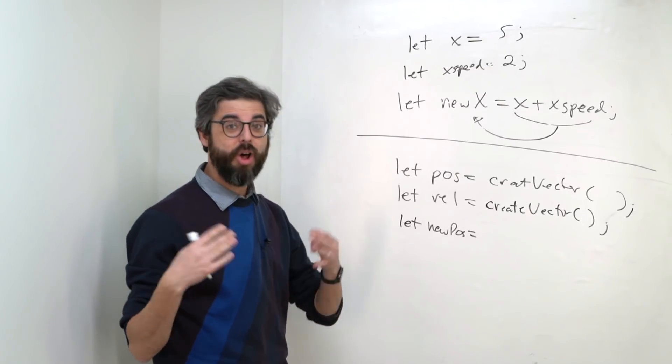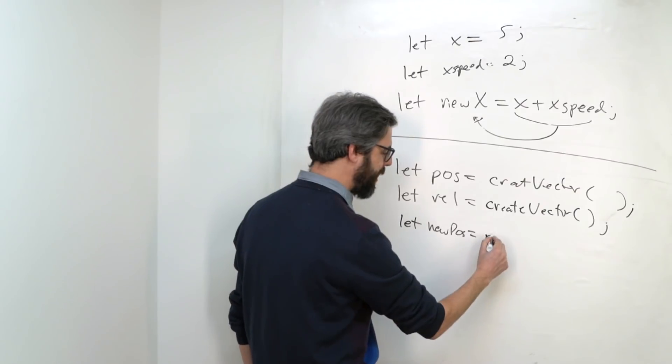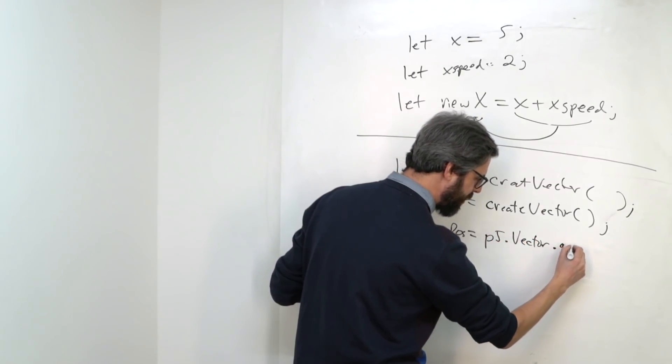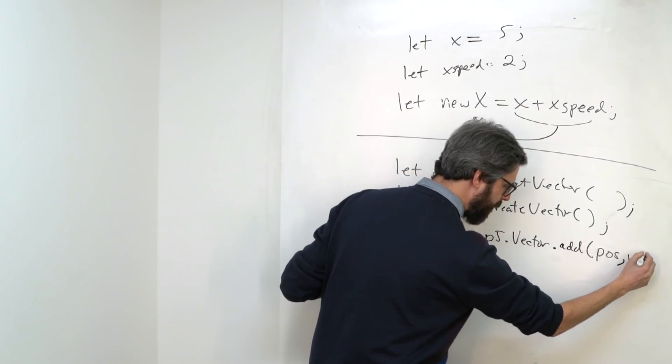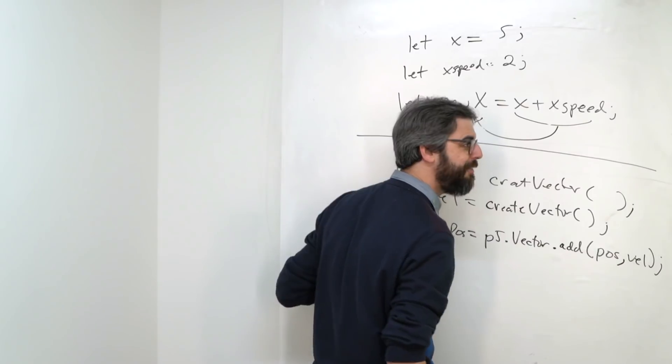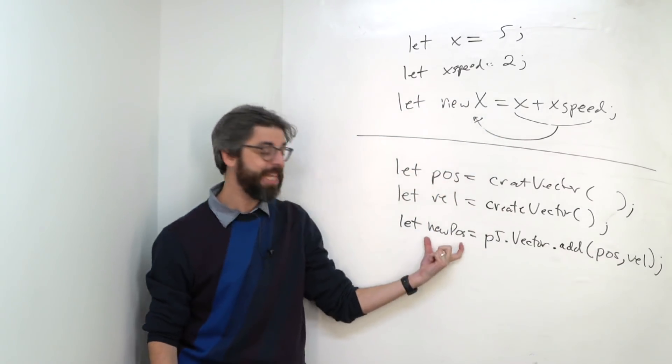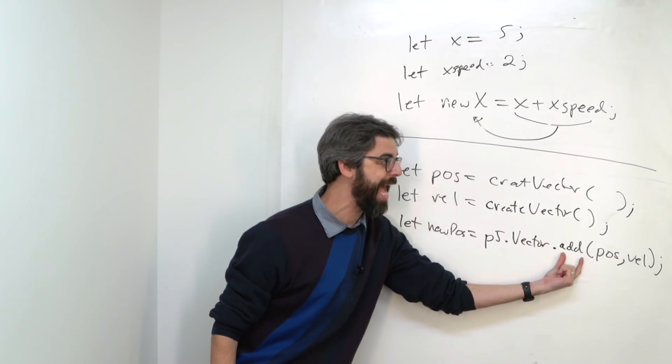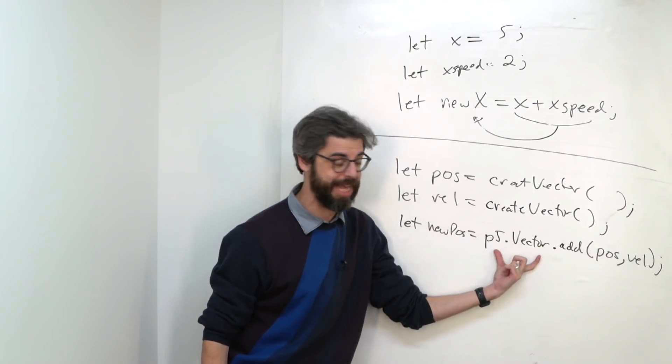If you want to add two vectors together but not mess with those vectors, you can use the static version of the add function. It's a bit wordy, and the code looks a little awkward, but it works. Let new pos equal p5 dot vector dot add position comma velocity. Did that fit? Oh, it fit. There you go. So if I want to add two vectors together and get the result in a new vector, I just need to call the static version of add, which is namespaced, stored under the p5 vector class itself.